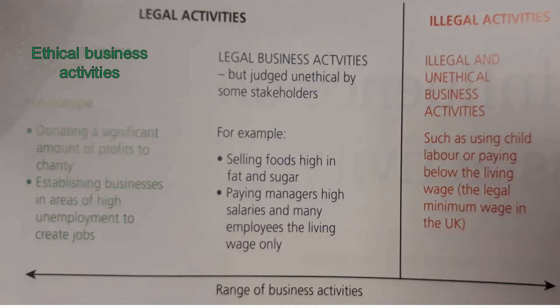This slide outlines the various range of business activities. On the far right we have illegal activities — things like using child labour or paying below the minimum wage in the UK. In the middle there are legal activities, such as selling foods high in fat and sugar, or paying managers high salaries while paying lower-level employees very low wages. These are legal, but are they morally correct?